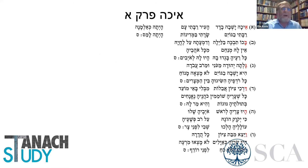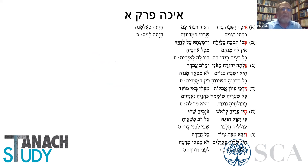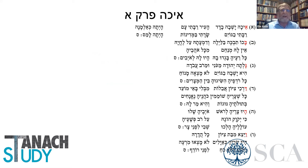Let's see Perek Aleph, for instance. Echa Yeshev HaBadad — Pasuk Aleph starts with Aleph. Pasuk Bet begins with Bachot Tifke Balayla. We have 22 verses in Echa Perek Aleph, all of them in alphabetic order — Aleph, Bet, Gimel, Dalet, and so on.